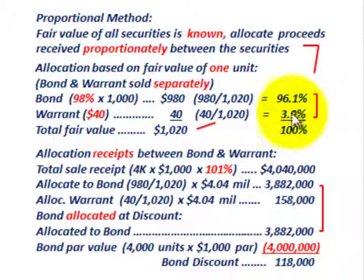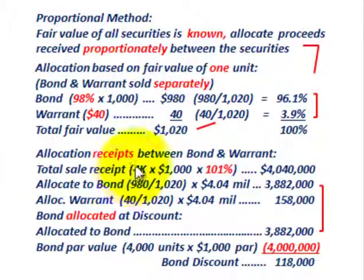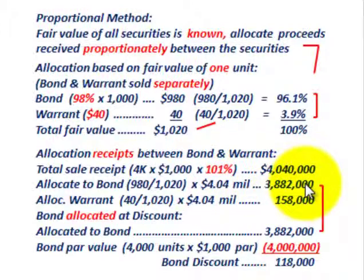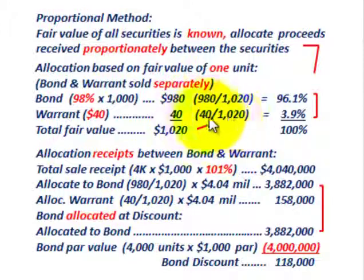The warrant gets 3.9% of the total. Next, we allocate the cash received between the bond and the warrant. Our total sales receipt: 4,000 bonds sold at 101% of $1,000 par equals $4,040,000. We allocate to the bond using the fractional amount of 96.1% times $4,040,000, which gives $3,882,000 allocated to the bond. For the warrant, 3.9% times $4,040,000 gives $158,000 allocated to the warrant.